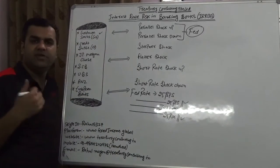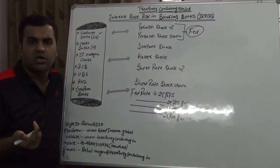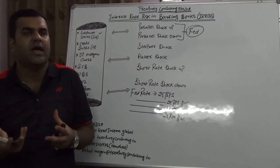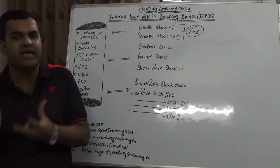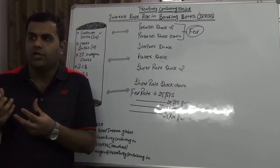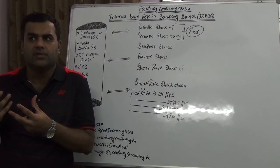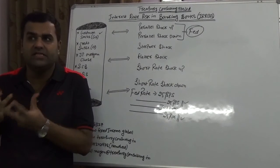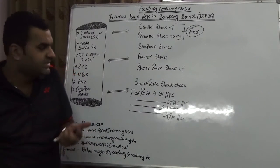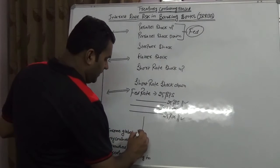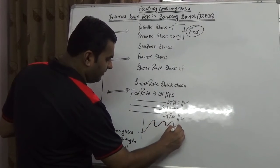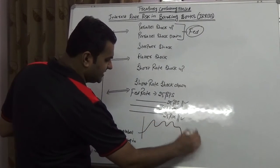One thing we have is a steepener shock. What do you mean by steepener shock? A steepener shock happens in scenarios something like 2008, or something like 2012, or maybe pre-1930, whereby things will change all of a sudden. The rate curve will go sharply like that — this is a steepener shock.